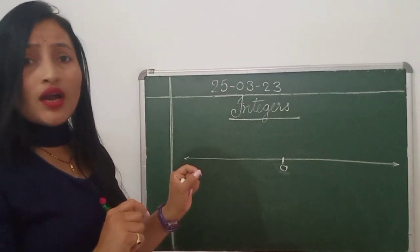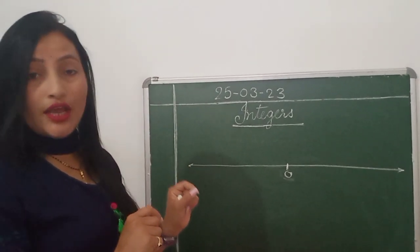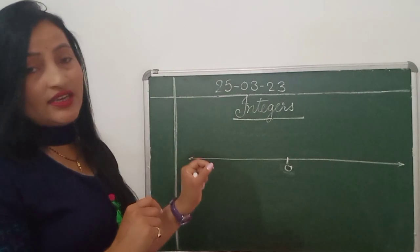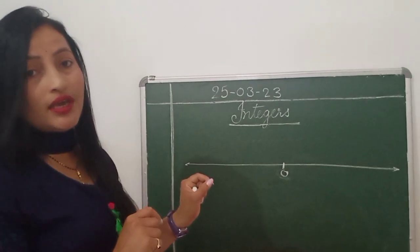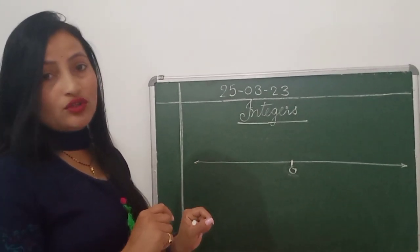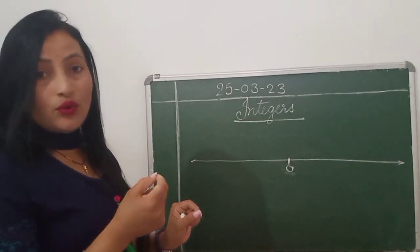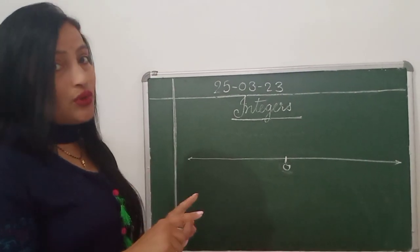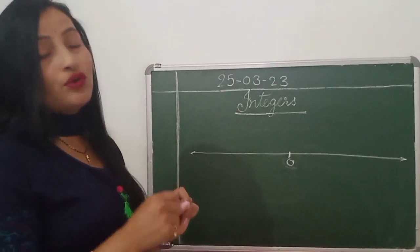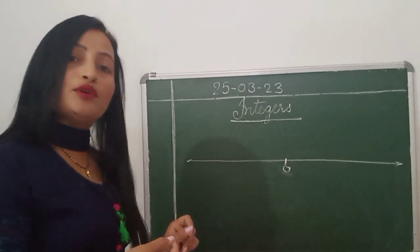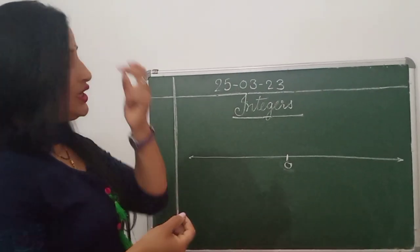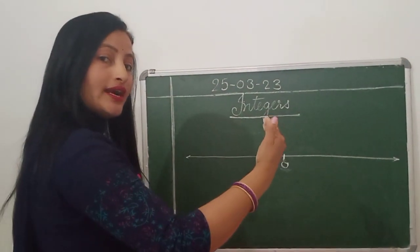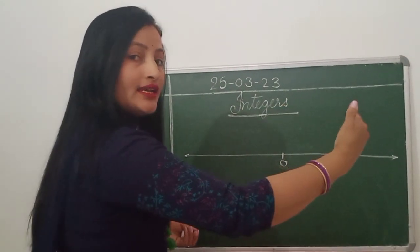0 का कोई sign नहीं होता है — ना plus की sign होती है. 0 एक ऐसा integer है जो negative भी नहीं होता है और positive भी नहीं होता है. 0 is neither positive nor negative.